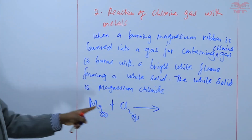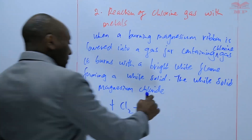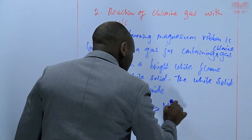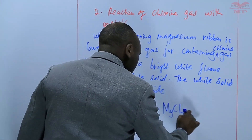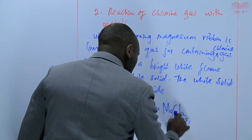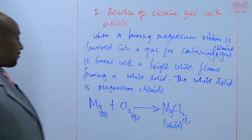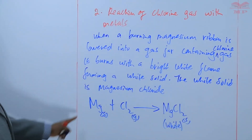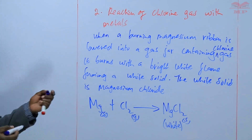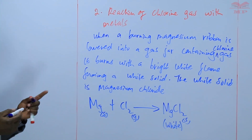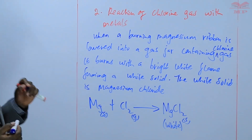We know that magnesium chloride is a salt. Magnesium chloride, which is a white solid, is formed. That equation does not need any further balancing, so we leave it at that.